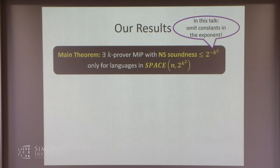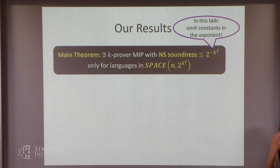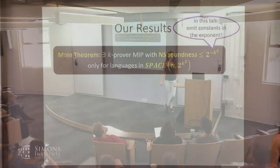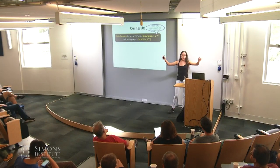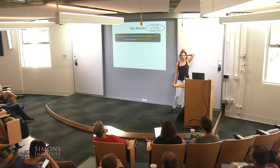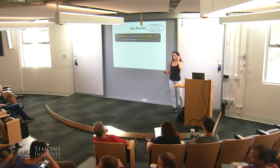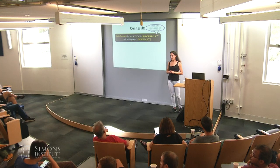There's no parallel repetition for no-signaling multi-prover games. Justin and Lisa showed examples where even after repetition you're stuck at a constant soundness — it doesn't reduce at all. However, with two provers in the no-signaling setting, you can do parallel repetition. If you increase the number of provers it's like sequential repetition, and then soundness does go down.